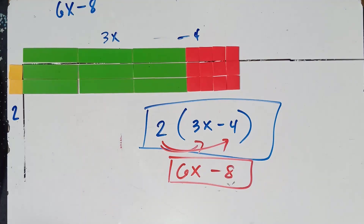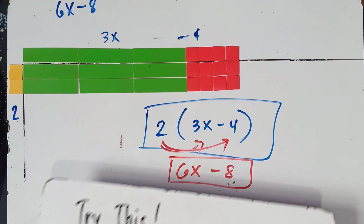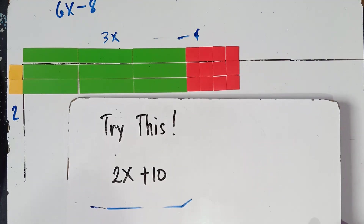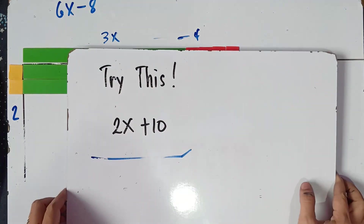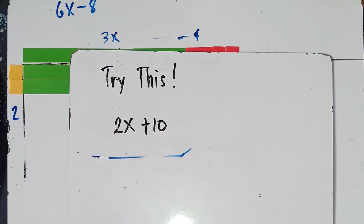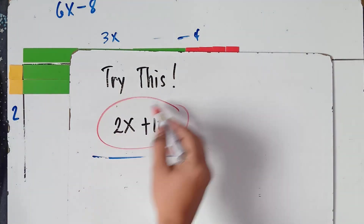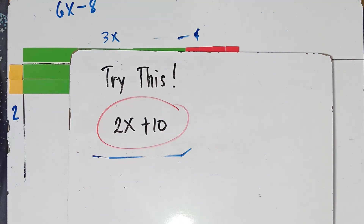That's how you use algebraic tiles to factor polynomials. Now how about you try this one: 2x plus 10. What would be the factors? Put your answer in the comment section down below. I hope you learned something new today. If you like this video, don't forget to like, share, and subscribe, and share it with your friends and classmates so we can help more students. This is Teacher MJ — have a great day, goodbye for now!